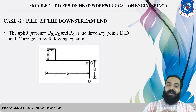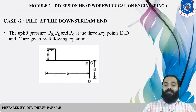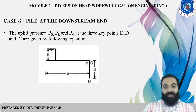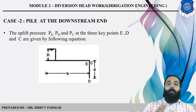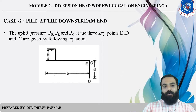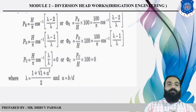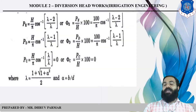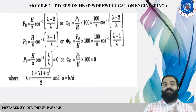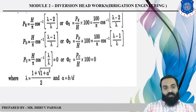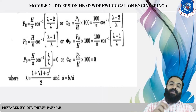When the pile is provided at the downstream side, the uplift pressure at point C equals zero — PC = 0 in all downstream cases. Please remember that. The formulas are: PE = (H/π) × cos⁻¹[(λ − 2)/λ], PD = (H/π) × cos⁻¹[(λ − 1)/λ], and PC = (H/π) × cos⁻¹[λ/λ] = 0.